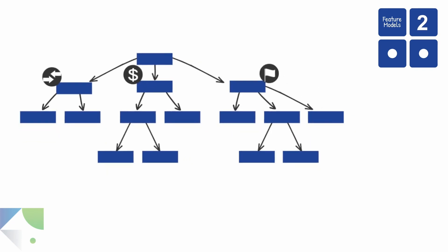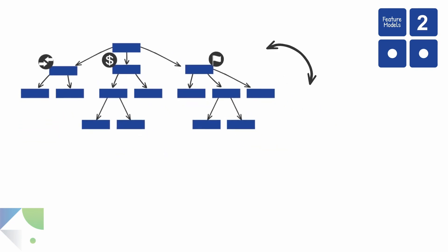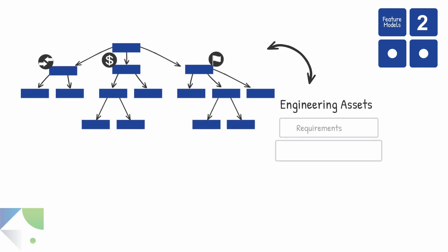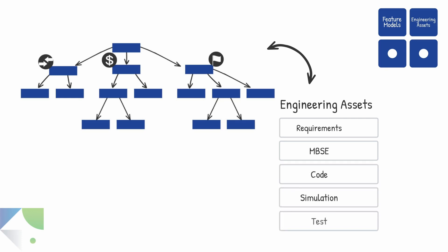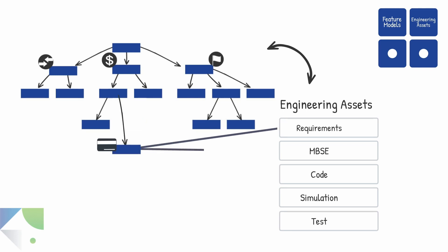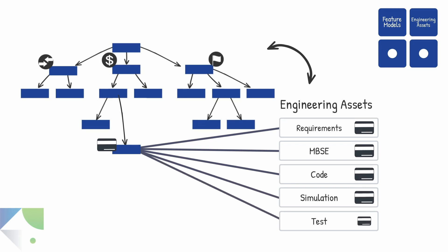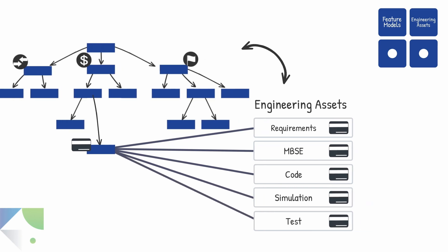In step two, the features get connected to the variable engineering assets like requirements or code. This happens directly in the tools where the assets are developed in a 150% context. For example, all assets for credit card payment get connected to the credit card feature.